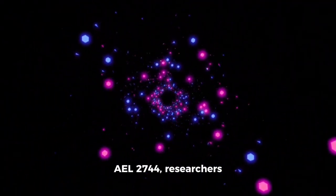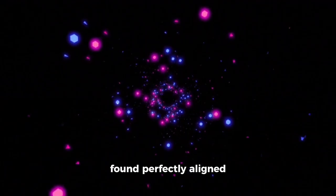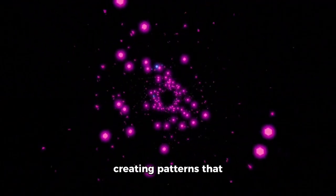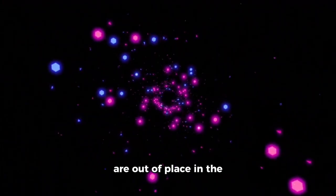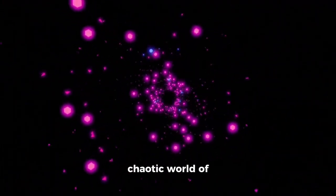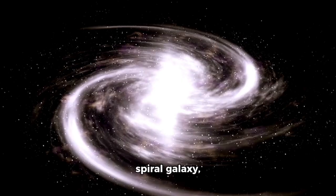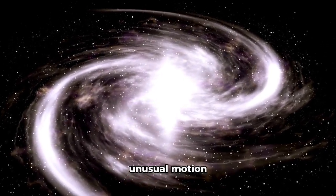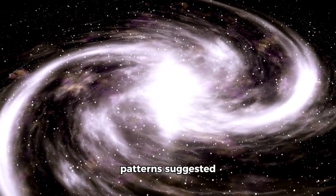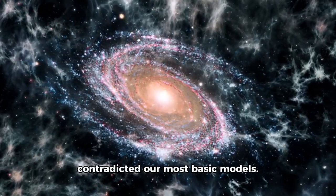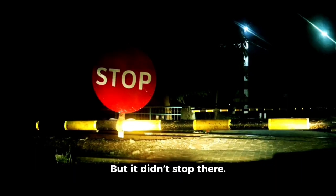In the galaxy cluster ABEL 2744, researchers found perfectly aligned light points and symmetrical structures creating patterns that are out of place in the chaotic world of galactic evolution. In NGC 1365, a spiral galaxy, unusual motion patterns suggested gravitational behavior that contradicted our most basic models. But it didn't stop there.